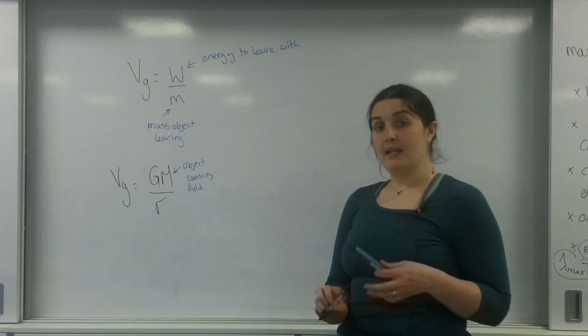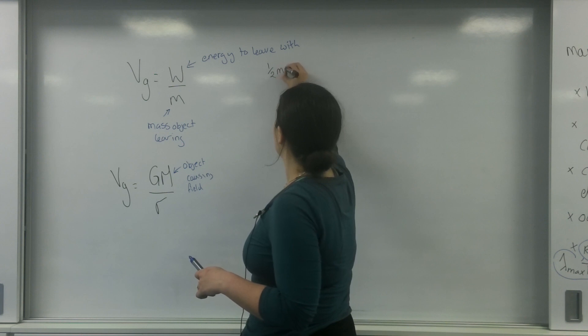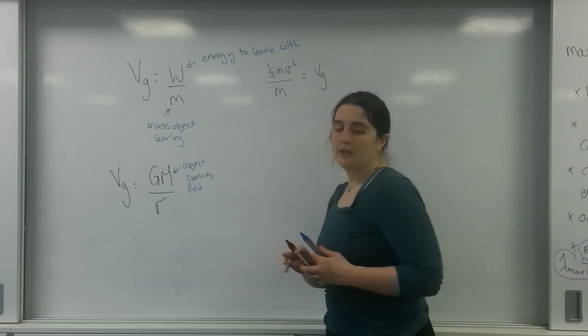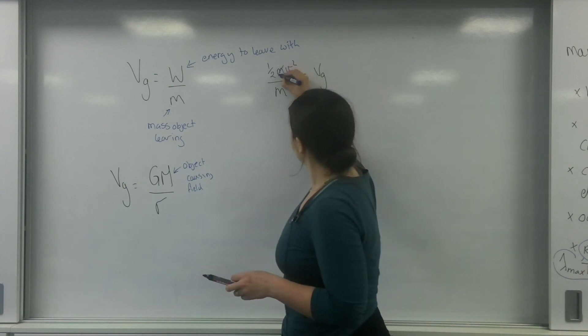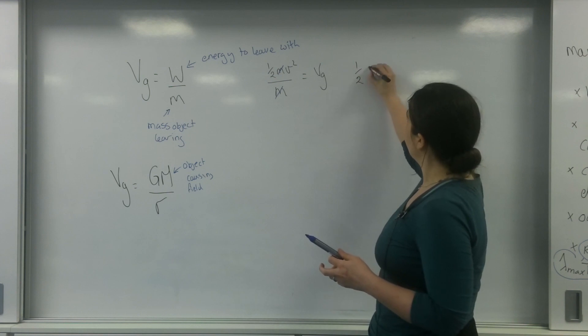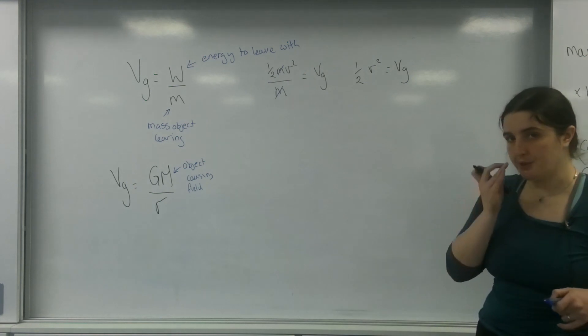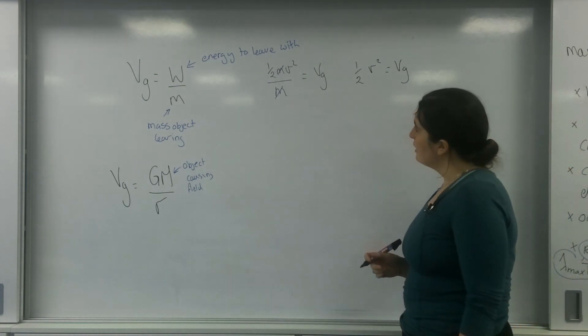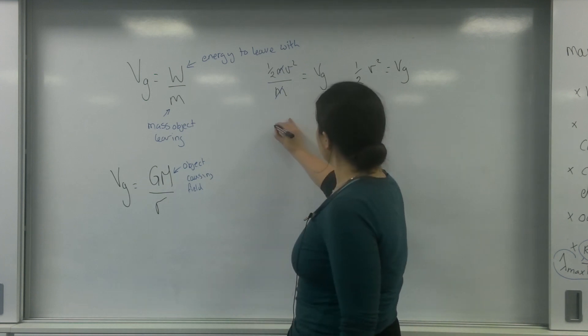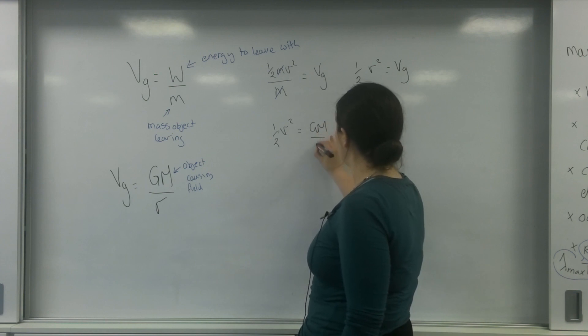The type of energy I'm going to be putting in is kinetic. So I'm going to say a half m v squared over m is my potential. The m's cancel, so I know that a half v squared is potential. I put my v's differently just because I don't want to get confused. So I know the potential at any point in the field is this. So I'm going to have a half v squared equals GM over r.